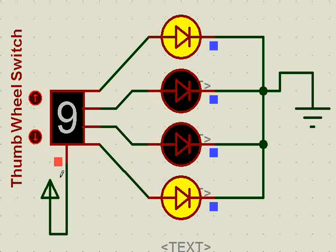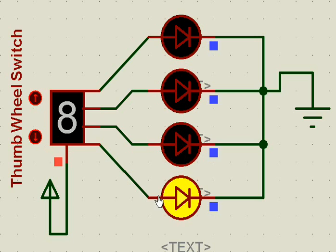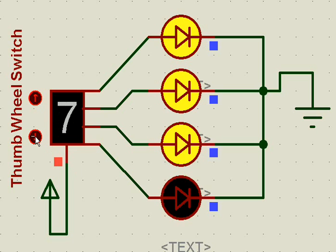Now, once we power this, you see if this is 9, we get 1, 0, 0, 1 — that means 9. And if it is 8, we get 1, 0, 0, 0 — that is 8. Or 4, 2, 1 — 4 plus 2 is 6, plus 1 is 7. And so on.